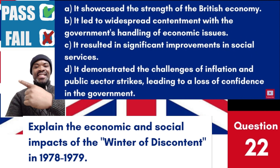Question 22: Explain the economic and social impacts of the Winter of Discontent in 1978-1979. a. It showcased the strength of the British economy. b. It led to widespread contentment with the government's handling of economic issues. c. It resulted in significant improvements in social services. d. It demonstrated the challenges of inflation and public sector strikes, leading to a loss of confidence in the government. Answer: d. The Winter of Discontent was characterized by widespread strikes and public dissatisfaction, significantly impacting the British economy and society and contributing to a change in government.